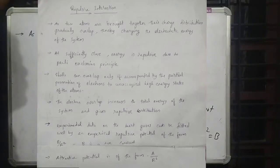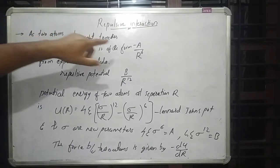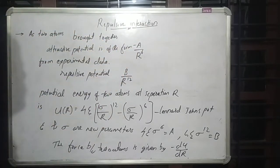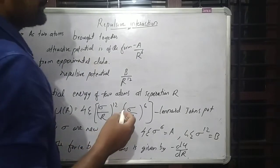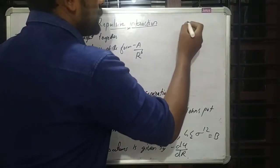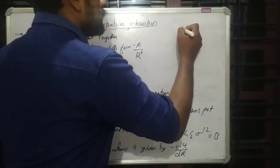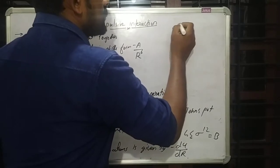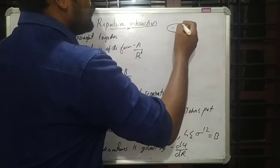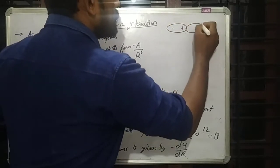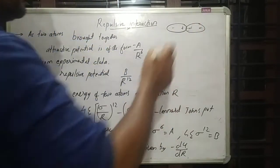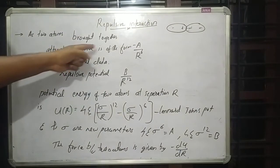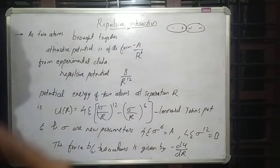Let us discuss repulsive interaction. Last class we discussed Van der Waals interaction energy, which was minus A over R raised to 6. That was attractive interaction — Van der Waals interaction is attractive due to the polarization of atoms, meaning positive and negative charges polarize, causing atoms to get attracted. That energy is minus A over R raised to 6.